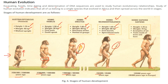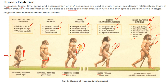Homo sapiens: height 1.7m, weight 70kg. Artistic work started to take place and specialized tools were made from bones and horns — 120,000 years ago. These are the stages of human development.